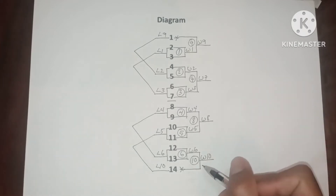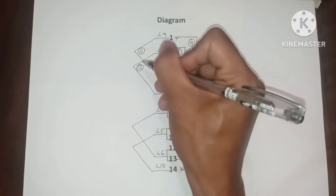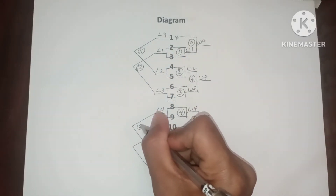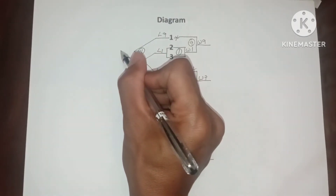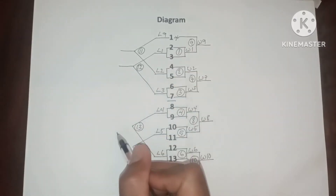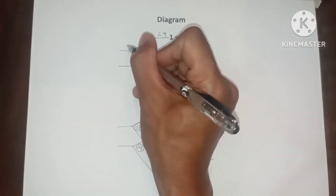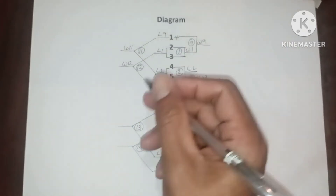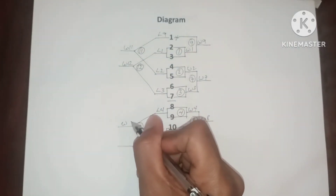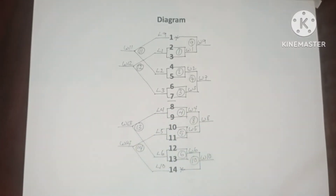Starting with game number 11, 12, 13, 14. Results: winner 11, winner 13, winner 14.